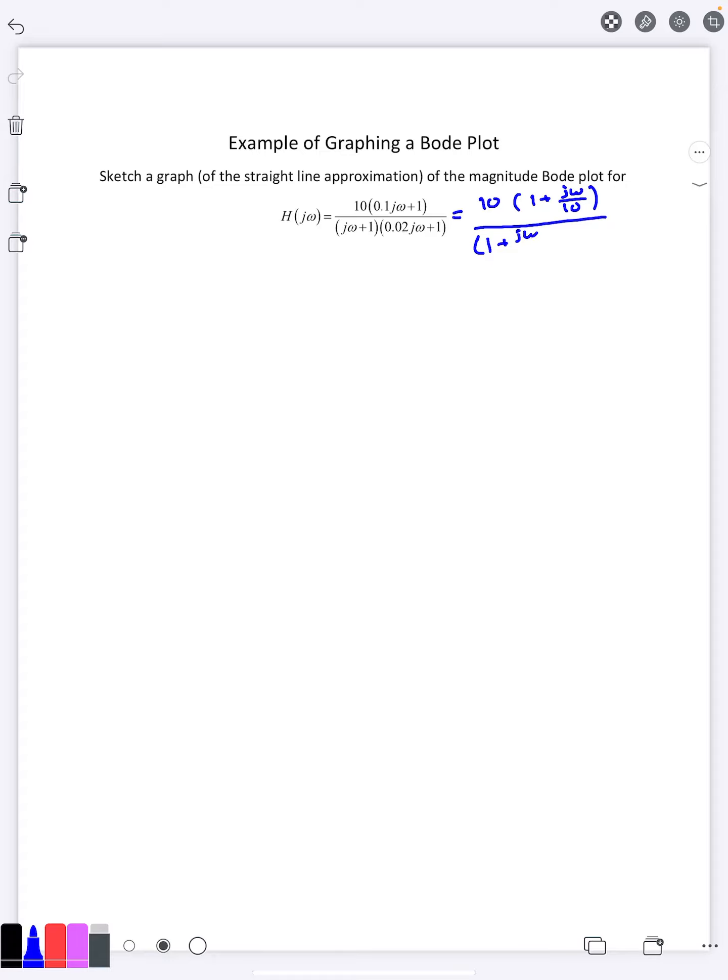This one is just 1 plus j omega over 1. There's nothing there. And then we also have 0.02 is the same as 1 50th. So this is going to be 1 plus j omega over 50.